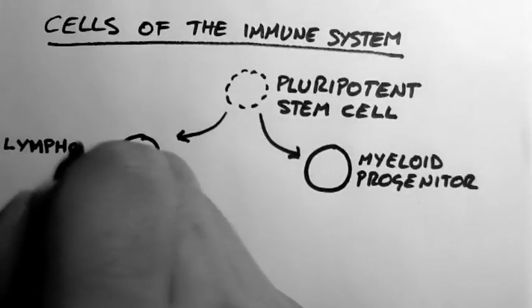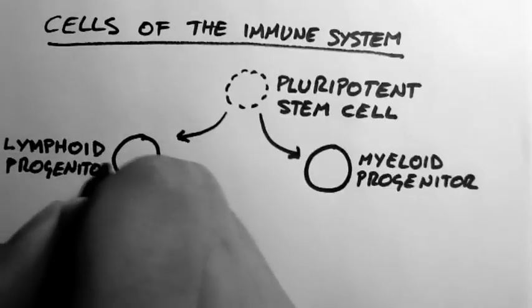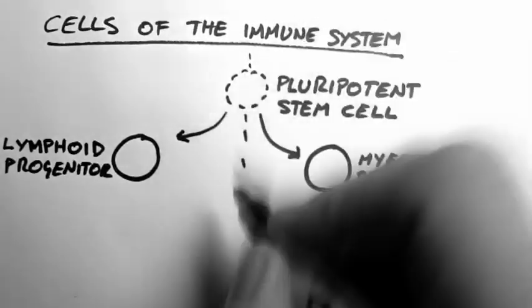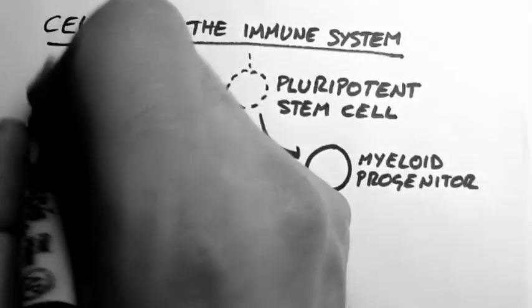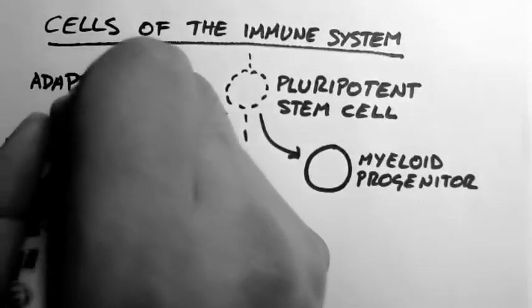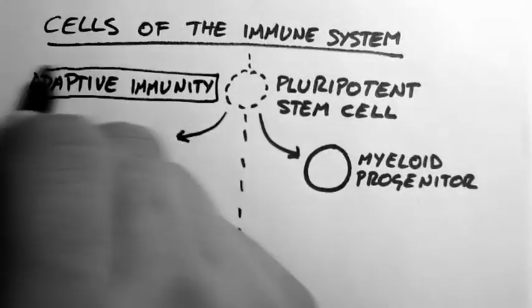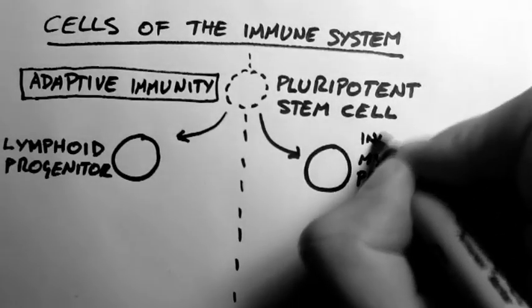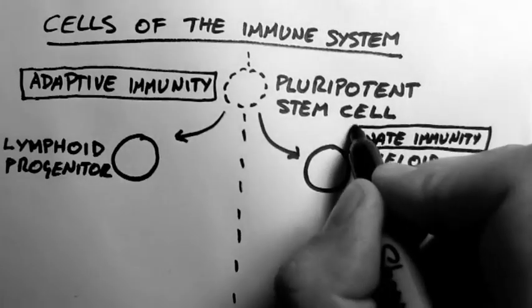Now this first distinction is very important as it more or less divides the immune system into two functional components. Cells that arise from the lymphoid progenitor are, for the most part, part of the adaptive immunity, which is a more complex type of immunity. The cells that arise from the myeloid progenitor, for the most part, are part of the innate immunity.